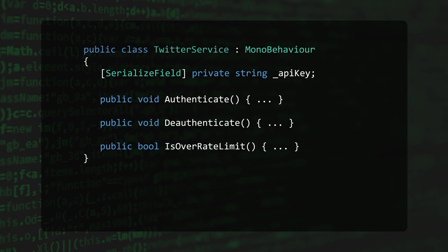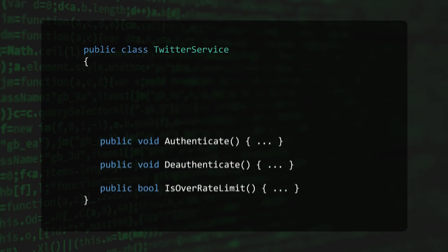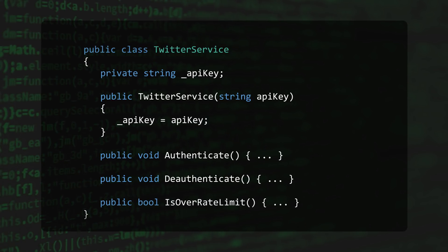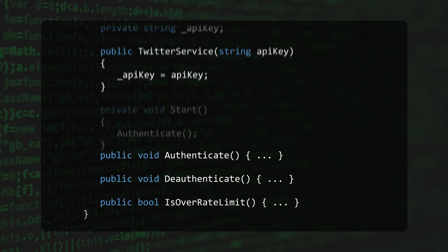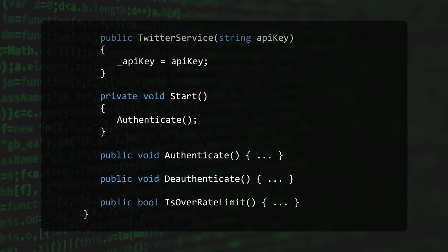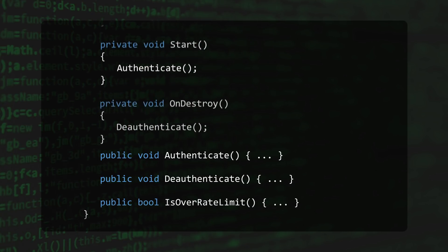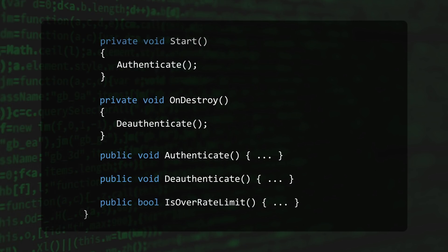So why not stick to a regular C# class instead of inheriting from MonoBehaviour? Well, that works, but what if we wanted to take advantage of some of the events that take place in Unity's life cycle? For instance, at startup we may want the service to authenticate with Twitter, and when the application closes, we may want it to deauthenticate for security purposes. We may also want to use the update loop to periodically check if we've gone over our rate limit for the day.